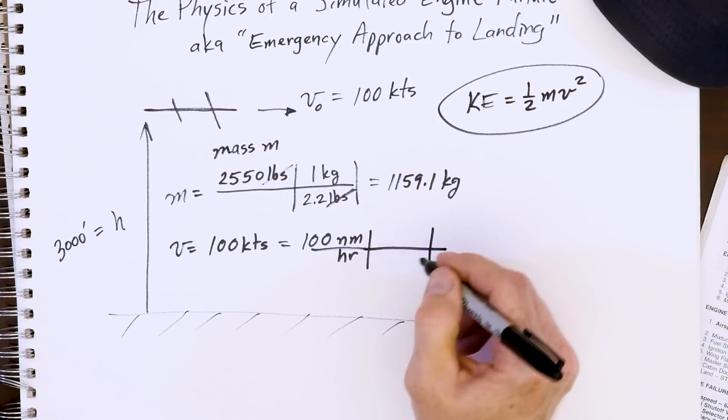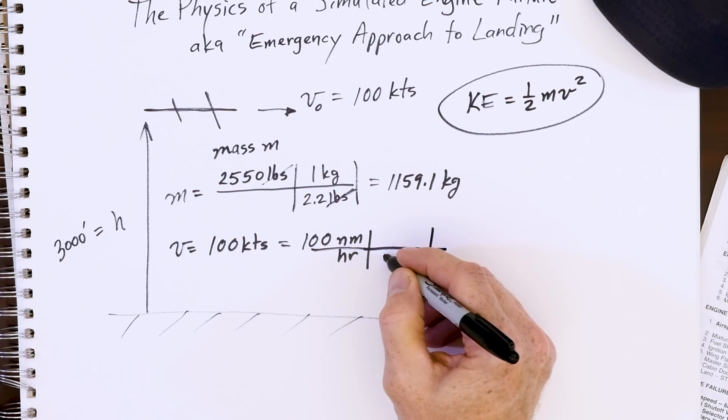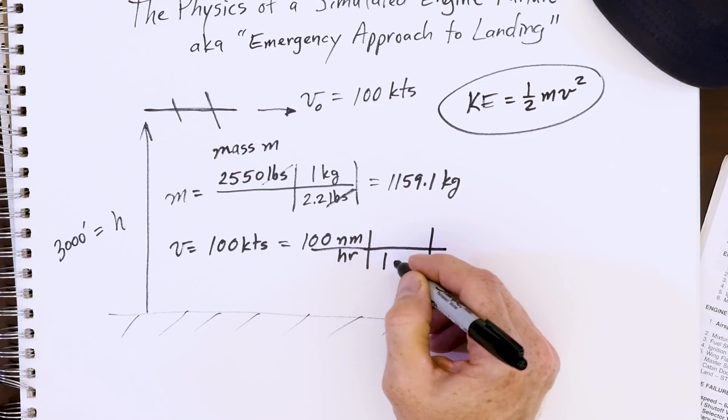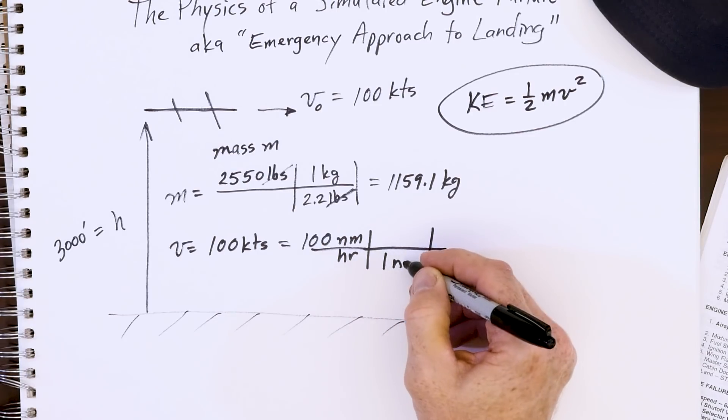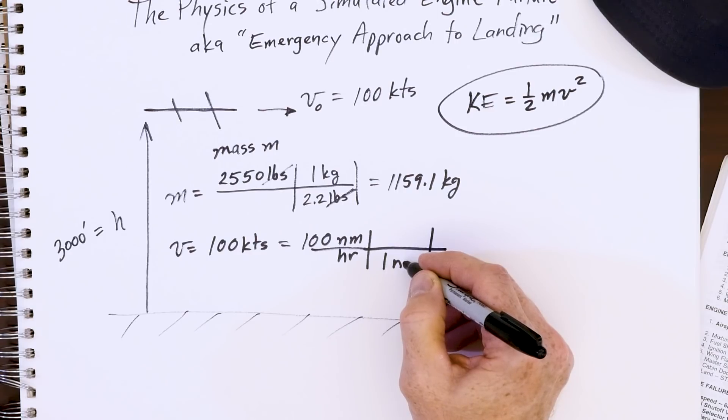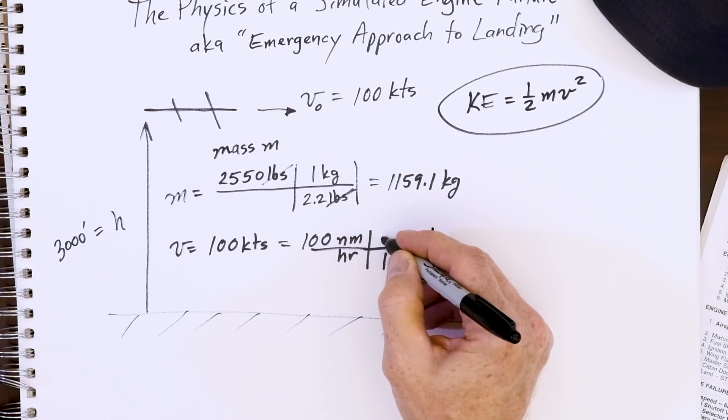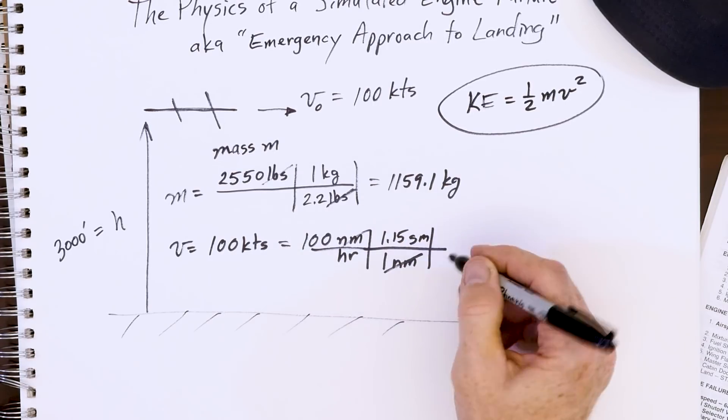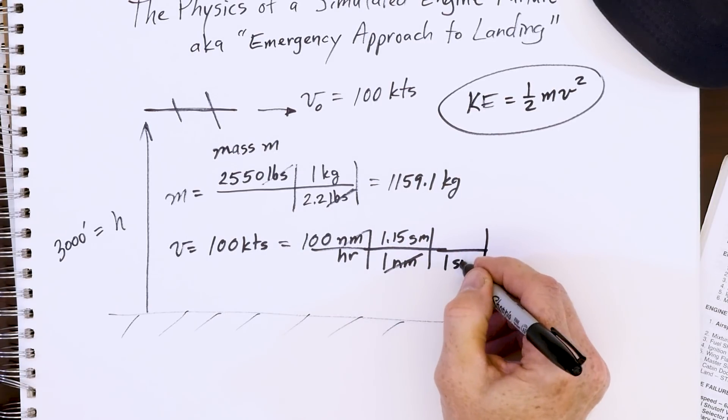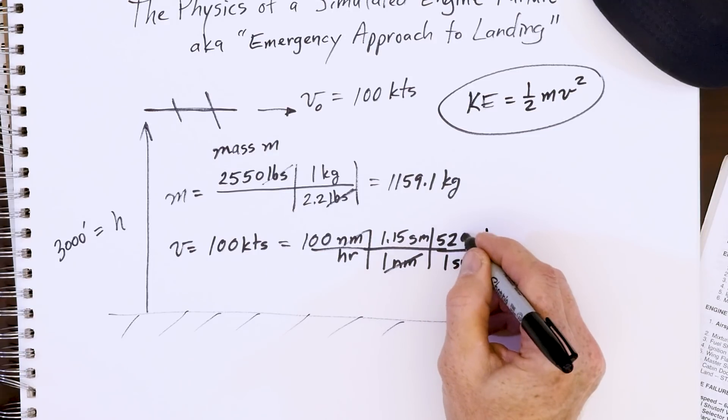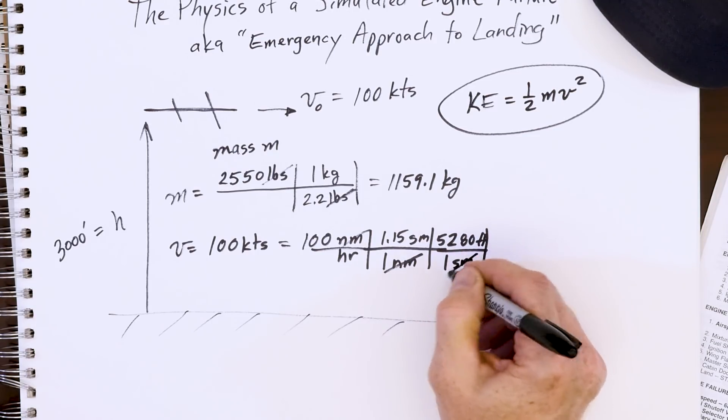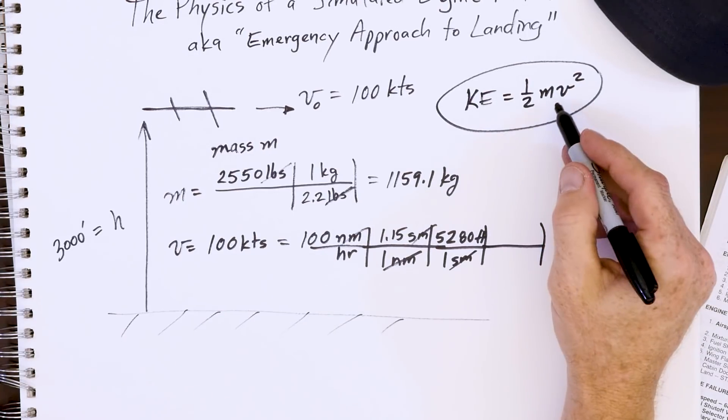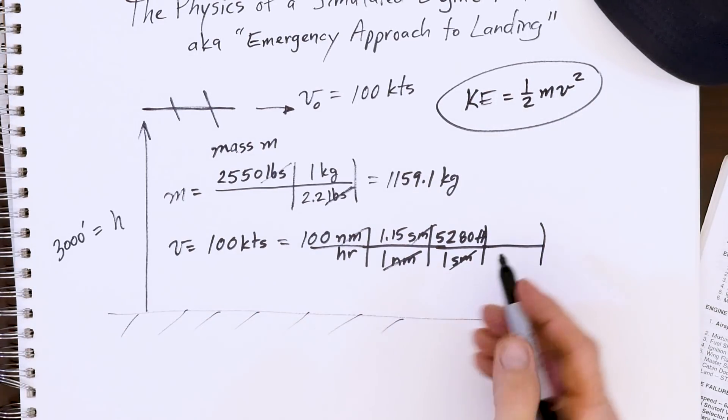So we all know that a nautical mile is slightly longer than a statute mile, a regular mile that we're used to. And the conversion is 100 knots is 115 miles an hour. So one nautical mile is 1.15 statute miles. Nautical miles cancel. We all know that one statute mile is 5,280 feet. Statute miles cancel. And remember our goal is to get to meters per second. You might know of a quicker conversion.